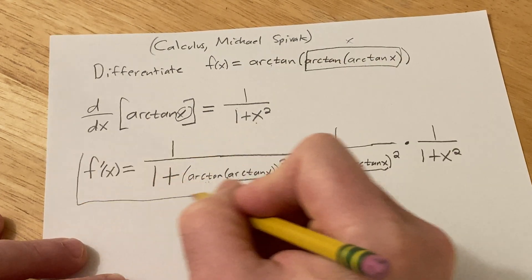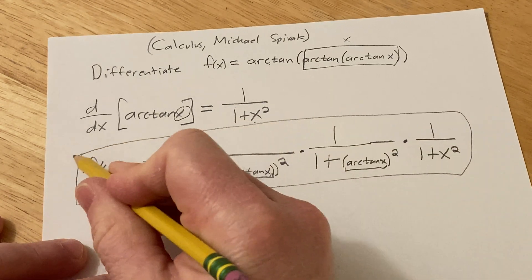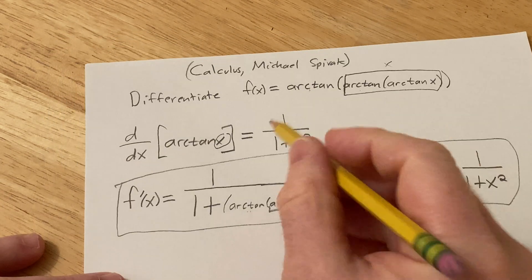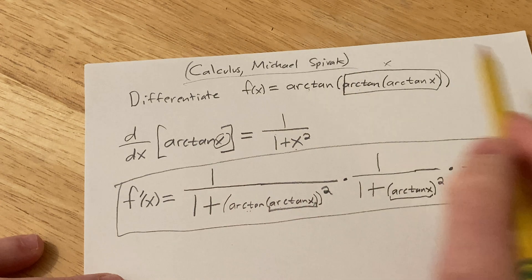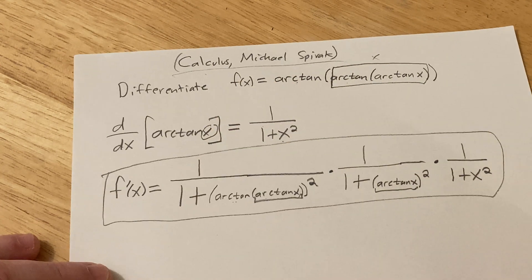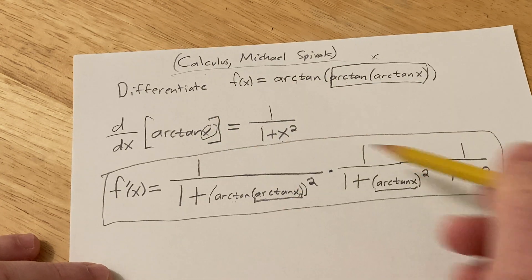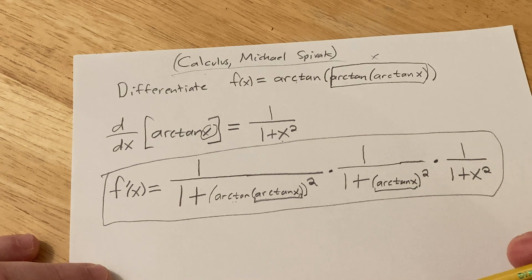And that's going to be our derivative here in this example. So just a problem, just a regular problem from a book called Calculus by Michael Spivak. So just kind of an interesting random problem to do. Good luck.